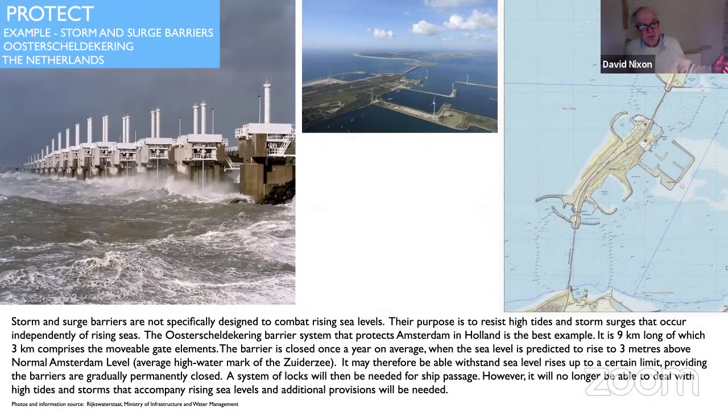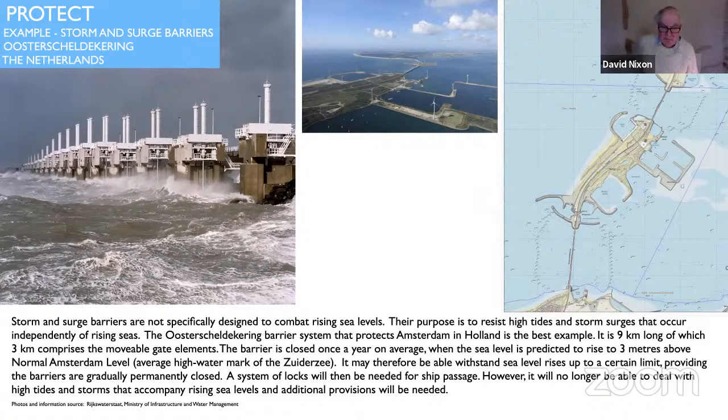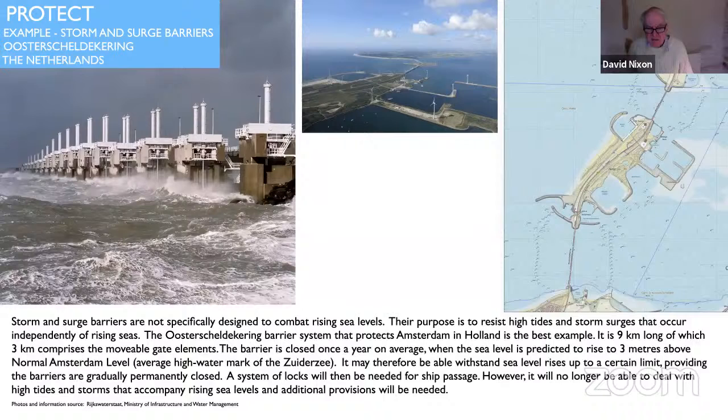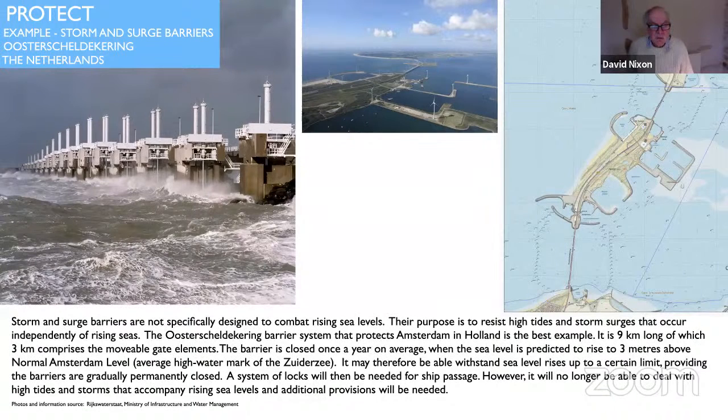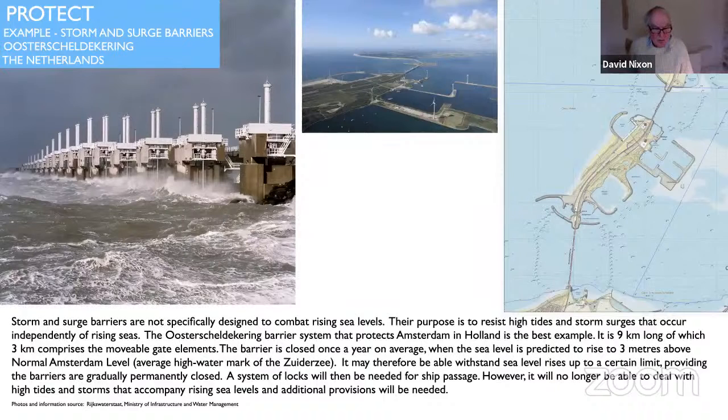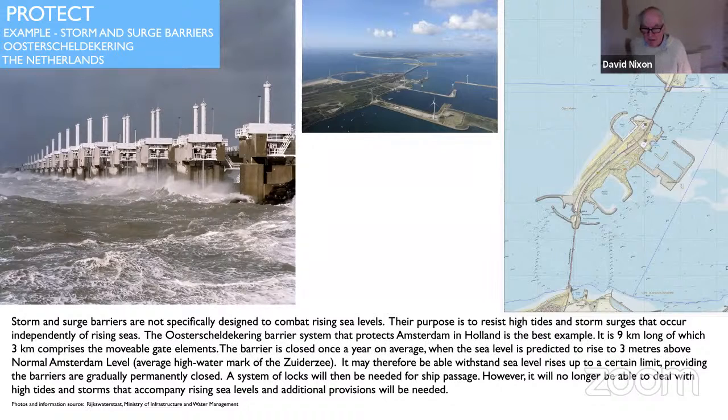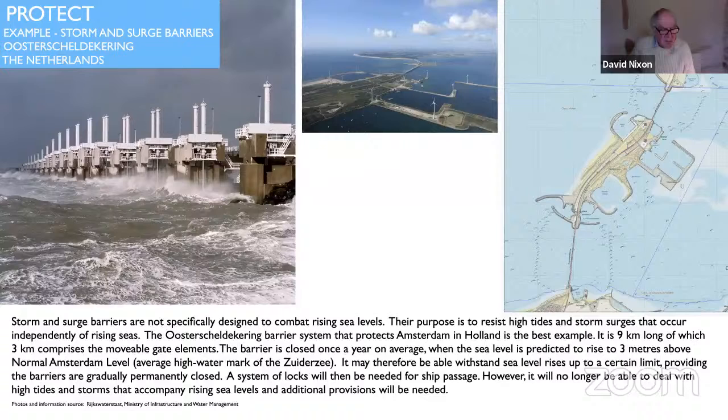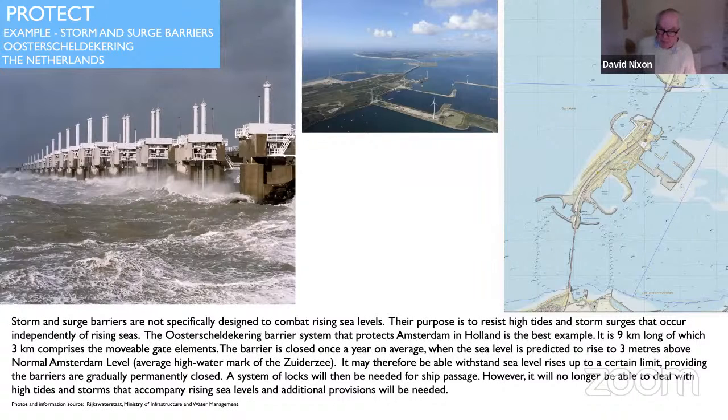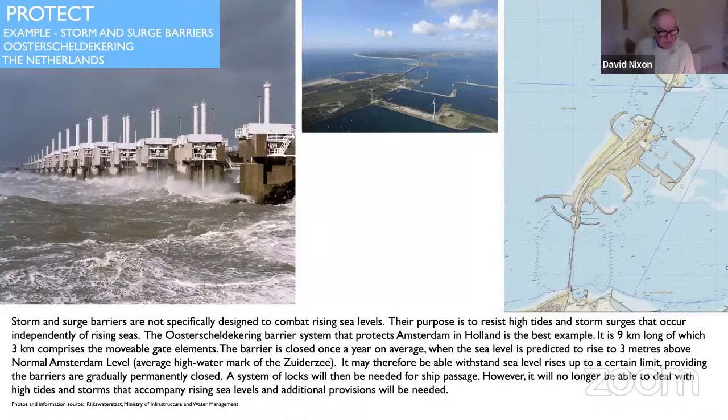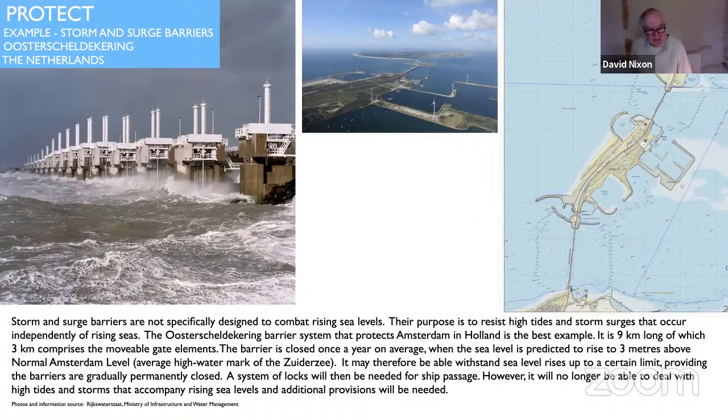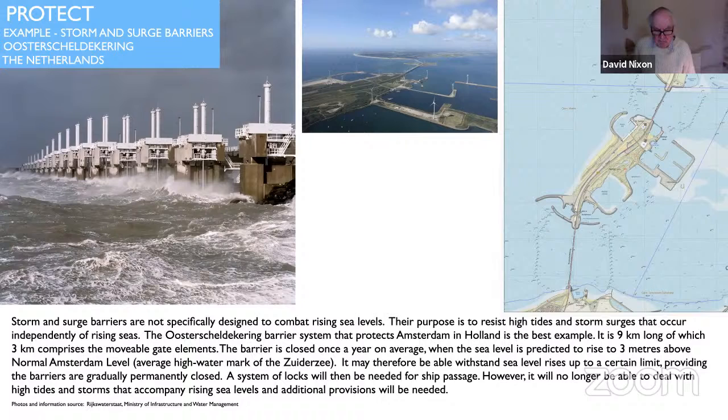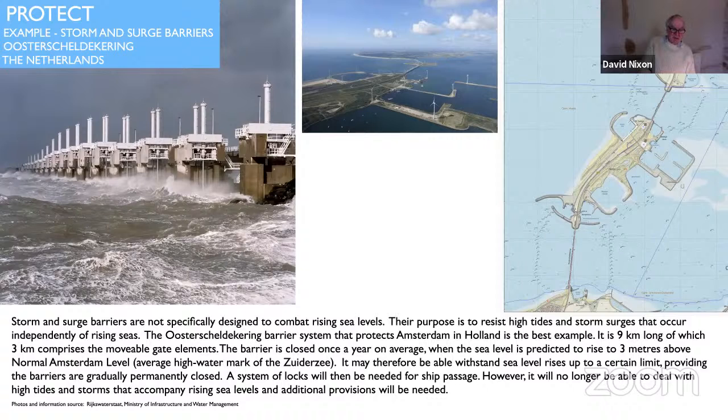And here's another example that I'm sure we're all familiar with, what they've done in the Netherlands. These were not specifically designed to combat rising sea levels. They were designed to protect Danish infrastructure communities and land from existing North Sea storm damage. The East Coast, Osta Shell, Shell Decorings, BRY system - nine kilometers long, of which three kilometers comprises movable gate elements. It was closed roughly once a year on average when the sea level is predicted to rise to three meters above what they call normal Amsterdam level, which is the average high water mark on the Zyder Sea.